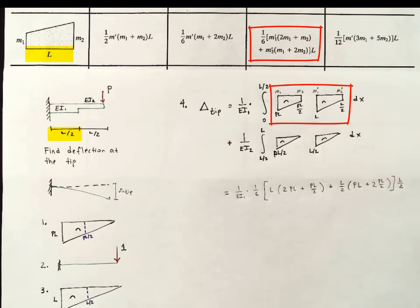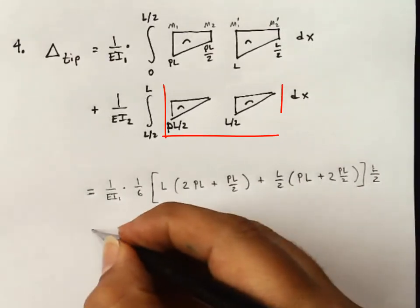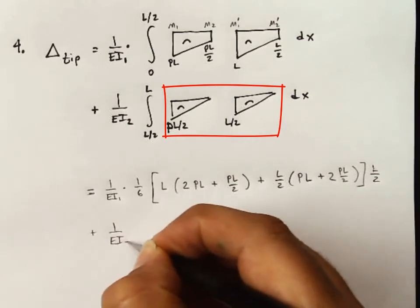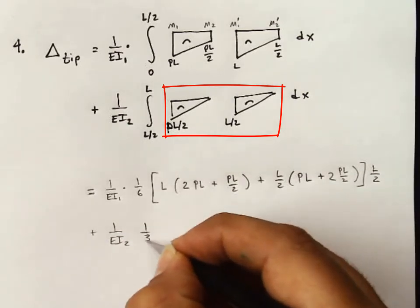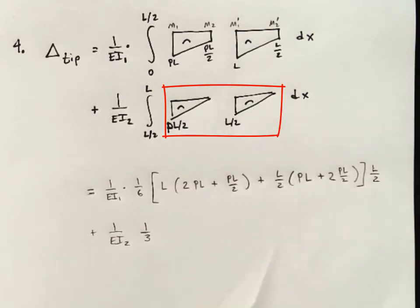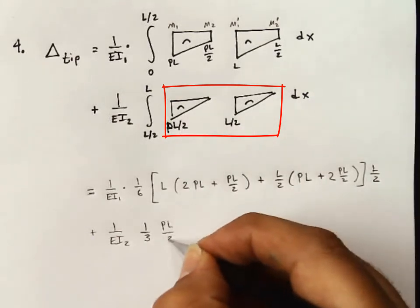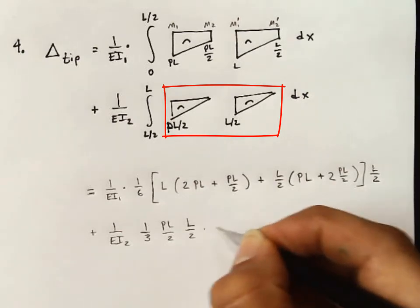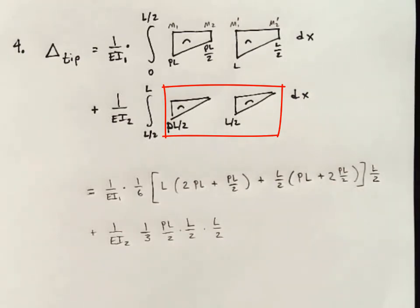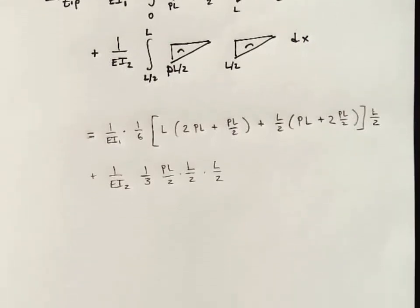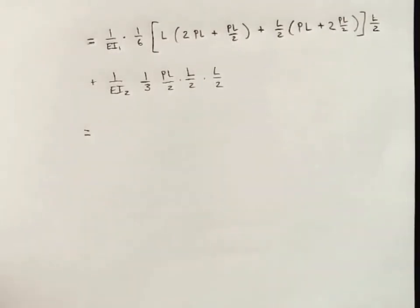Now we can put away our integration table and complete the problem. I'm going to add in 1 over EI 2. 1 third is the integration factor for a triangle times a triangle. L, height of one of the triangles, height of the other triangle, the base common to both triangles. And now we have a good amount of arithmetic to do. It's not difficult conceptually, but it is a pain in the butt, and we do need to be careful. So what I'm going to do is I'm going to factor out.